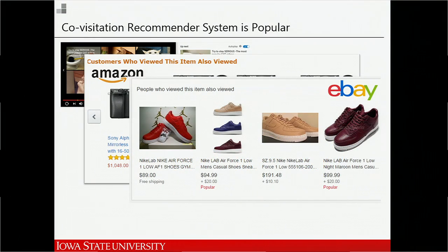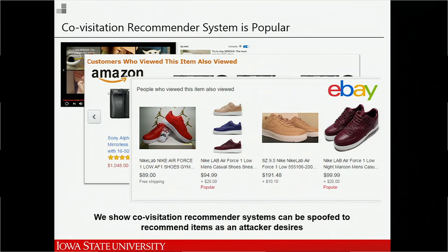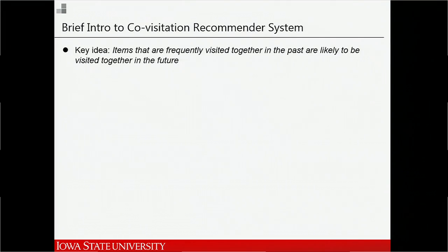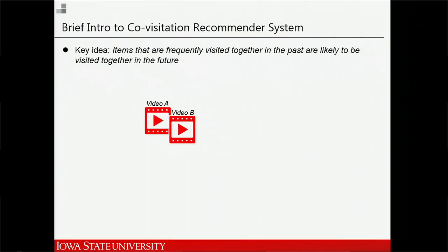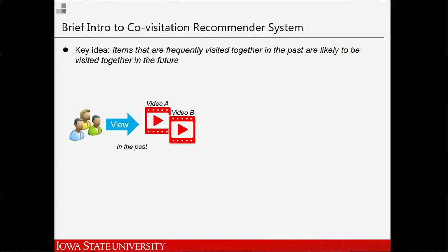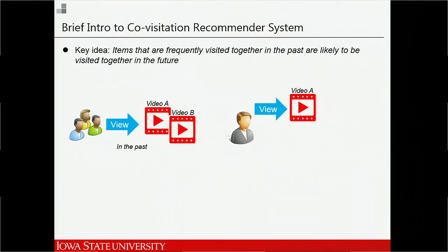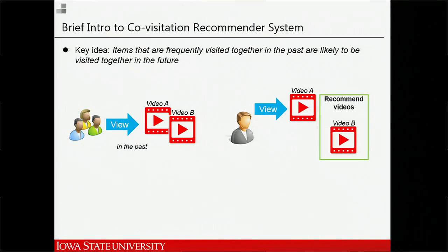In this paper, we find that this popular covisitation-based recommender system is actually vulnerable to a very simple type of attack — an attacker can manipulate a recommender system to make recommendations as he wants. The covisitation recommendation system is based on the idea that items frequently viewed together in the past are likely to be clicked by users in the future. For example, if videos A and B are frequently viewed together, YouTube may guess there's some correlation, and in the future, if a user clicks video A, YouTube will show video B on video A's recommendation list.